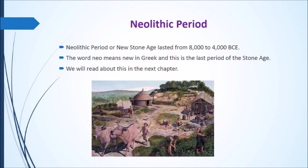The Neolithic period is also called the New Stone Age. It lasted from 8,000 to 4,000 BCE. The word 'Neo' means new in Greek language, and this is the last period of the Stone Age. We will read about this in detail in the next chapter.